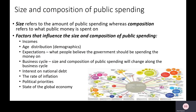Welcome back. We're now going to think about what affects the size and composition of public spending. The size refers to how much government spending takes place, whereas the composition refers to what public money is spent on — what will dictate how much the government chooses to spend, and what they choose to spend money on.